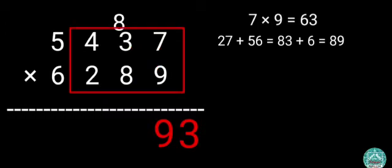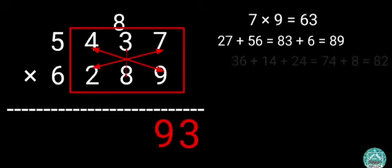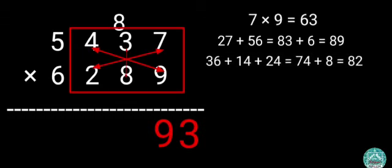Step 3: Multiply 4 by 9, 7 by 2, and 3 by 8, then add. 36 plus 14 plus 24 equals 74. Then add 74 and 8 that's carried forward. 74 plus 8 equals 82. Write 2 before 9 and carry forward 8.